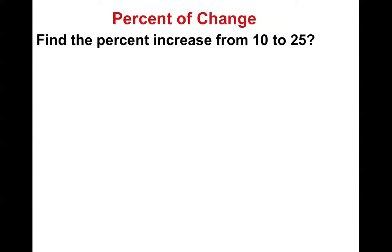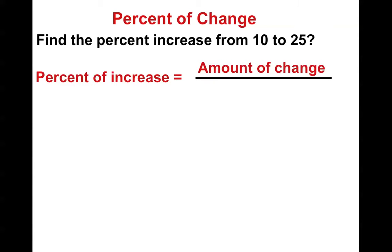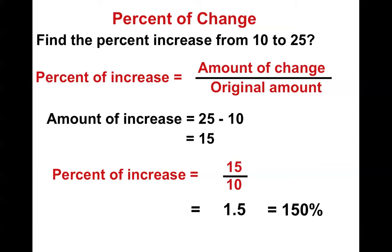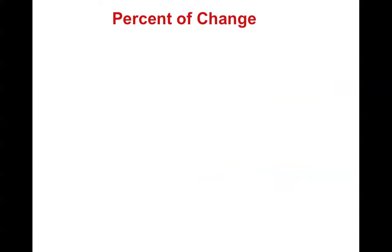Alright, so if we wanted to find out what the percent of change of something was from 10 up to 25, notice the formula stays the same. How much did it change? Did you say 15? Good. And then that would be 15. And what was the original amount? 10. The most popular mistake is people will put 15 over 25. It's always the number that was the original amount. And since we went from 10 to 25, 10 was the original amount, which gets us 1.5. And 1.5 would get us 150%.